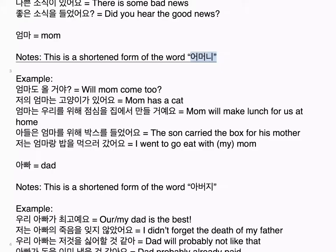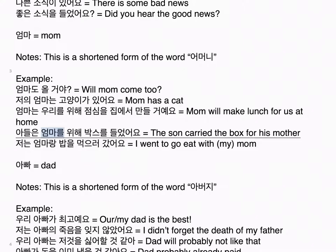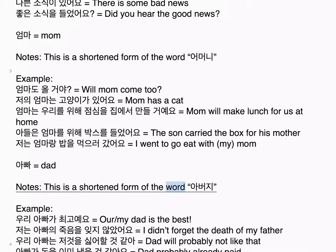엄마 equals mom. Examples: 엄마도 올 거야. 저의 엄마는 고양이가 있어요. 엄마는 우리를 위해 점심을 집에서 만들 거예요. 아들은 엄마를 위해 박스를 들었어요 — the son carried the box for his mother. 저는 엄마랑 밥을 먹으러 갔어요 — I went to go eat with my mom.